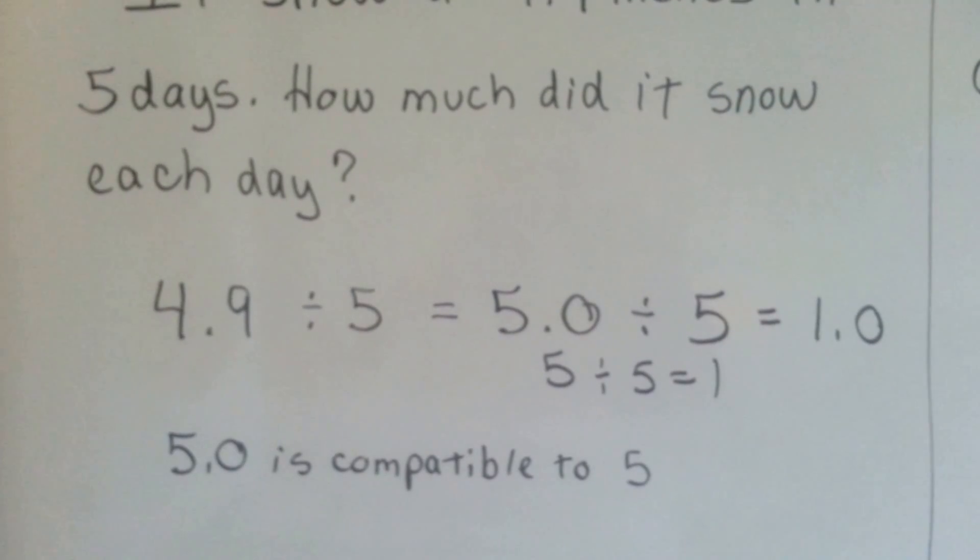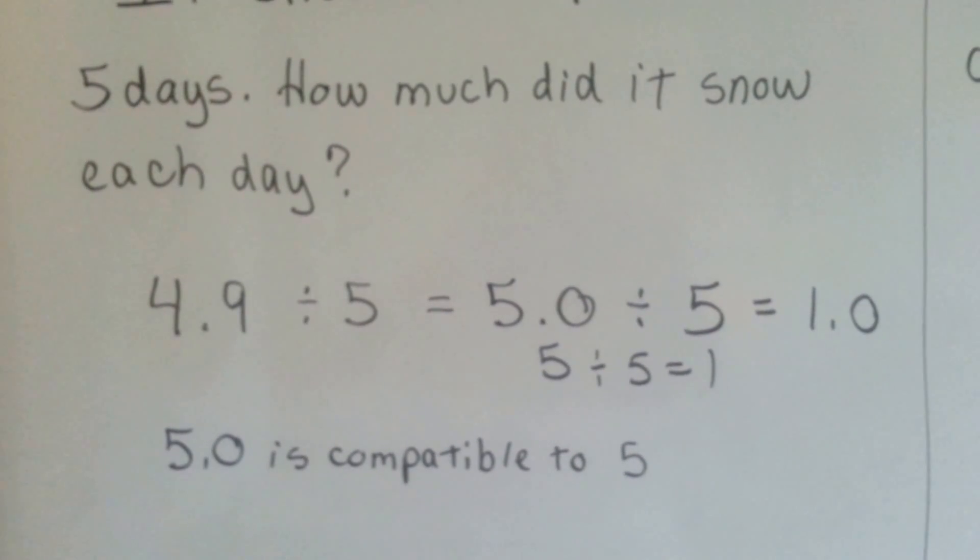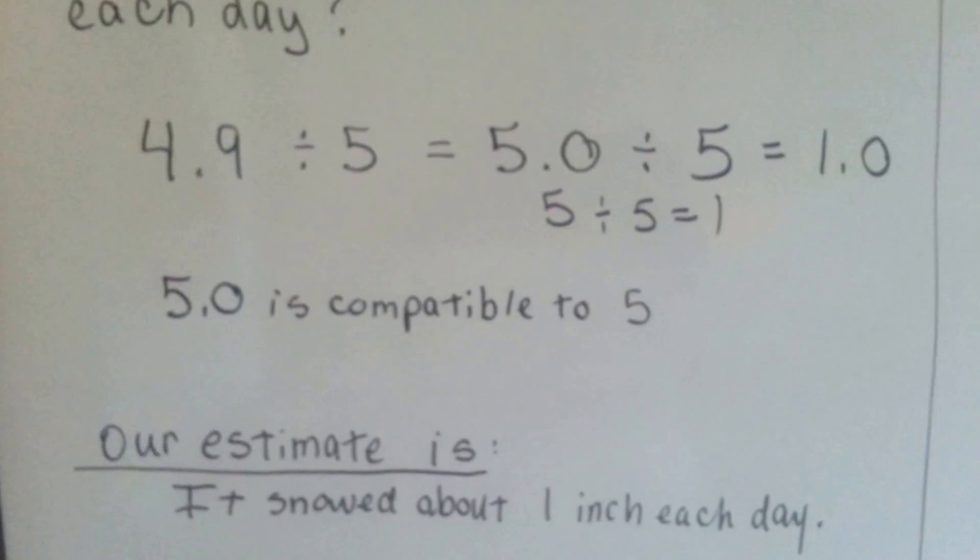4.9 can be rounded to 5, and 5 is compatible to 5, so you could say it snowed about an inch a day.